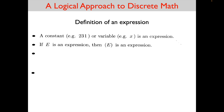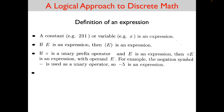The second part of the definition of an expression is: if E is an expression, then open paren E close paren is an expression. Notice that E is uppercase as opposed to the variable in the first part of the definition which is a lowercase x. Our convention throughout this course is that uppercase letters are expressions and lowercase letters are variables. The third part of the definition is: if circle is a unary prefix operator and capital E is an expression, then circle E is an expression with operand E.